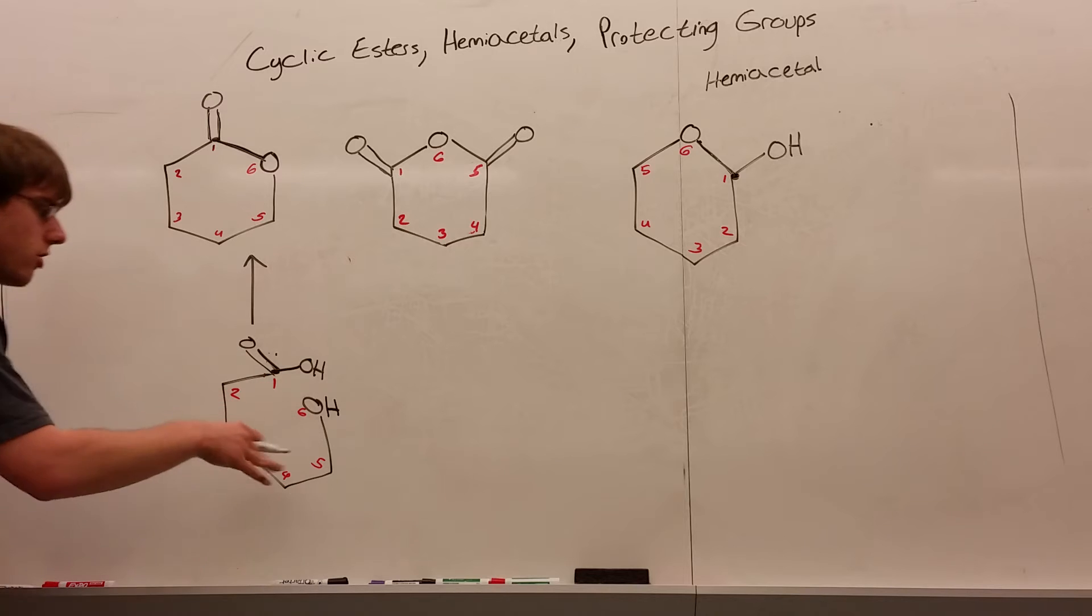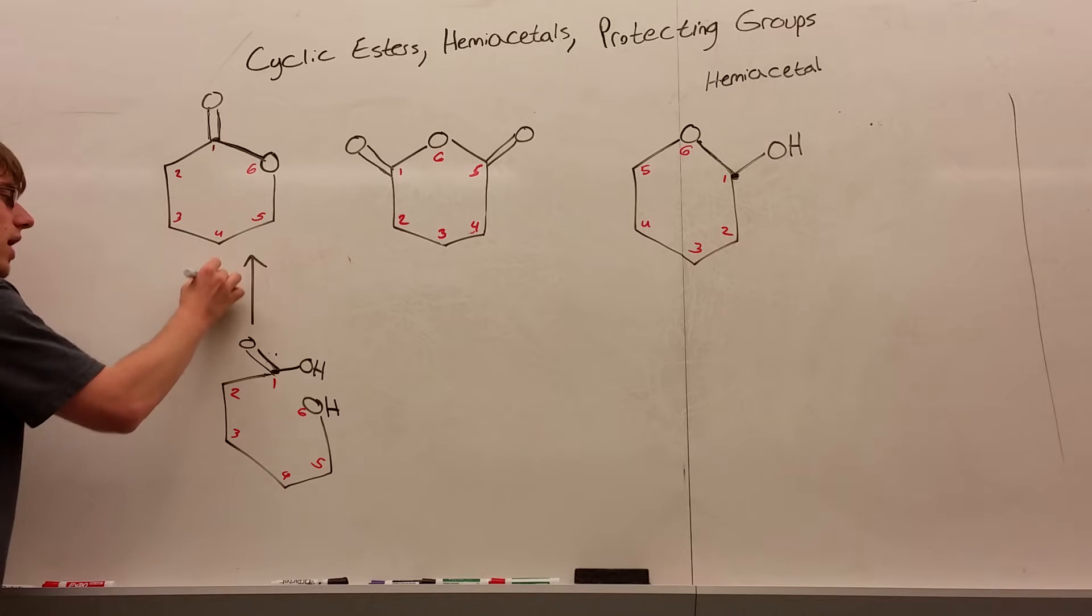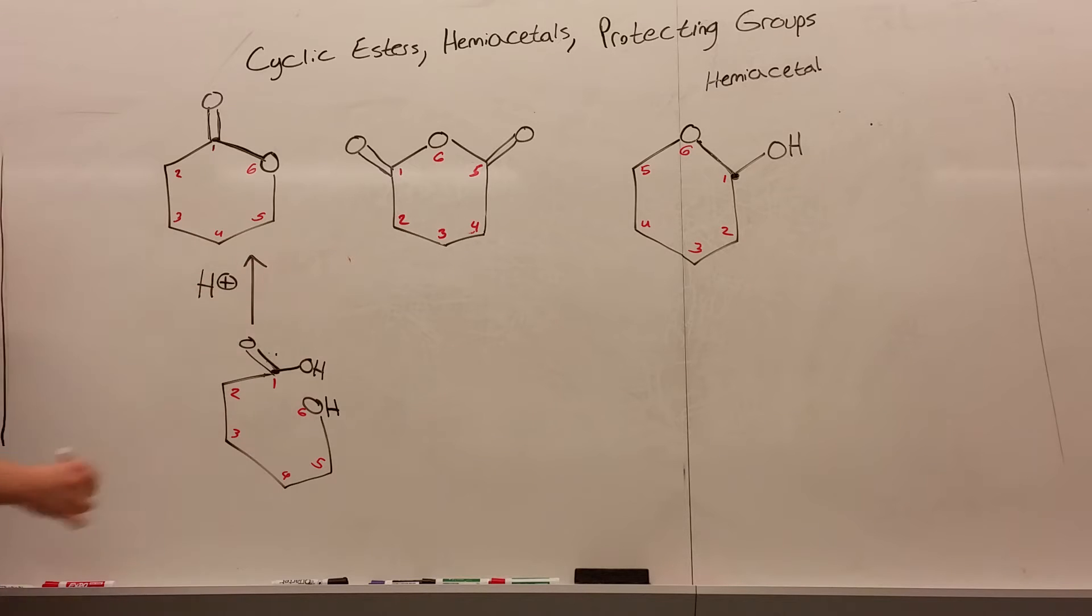If you ever see a carbon chain that has an OH on one end and a carboxylic acid on the other, and then you have it treated with H+, you will end up forming a ring like this. And in a retrosynthesis, we're trying to build this, so going backwards we use H+ to turn it back into this carbon chain.